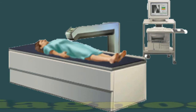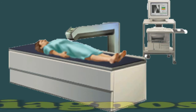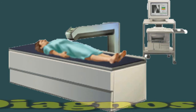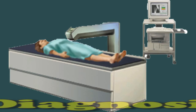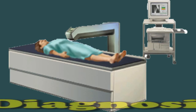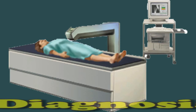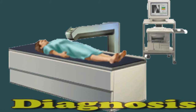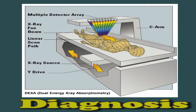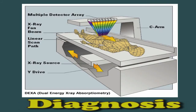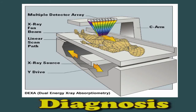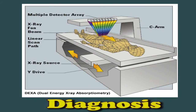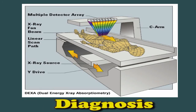A doctor will consider family history and any risk factors when assessing for osteoporosis. If they suspect osteoporosis, they will request a bone mineral density scan, or BMD. Bone density scanning uses a type of x-ray known as dual-energy x-ray absorptiometry, or DEXA. DEXA can indicate the risk of osteoporotic fractures and can also help monitor a person's response to treatment.